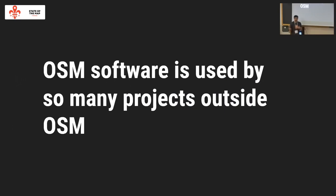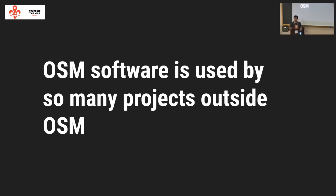about how we maintain and manage and grow the software on OpenStreetMap. There'll be very little talk about tagging and data and geometries. It comes from the context that OpenStreetMap software is used by many projects and organizations outside of OpenStreetMap, and more so in recent years with a lot more adoption of awesome data, and people wanting to do more validation and quality control.